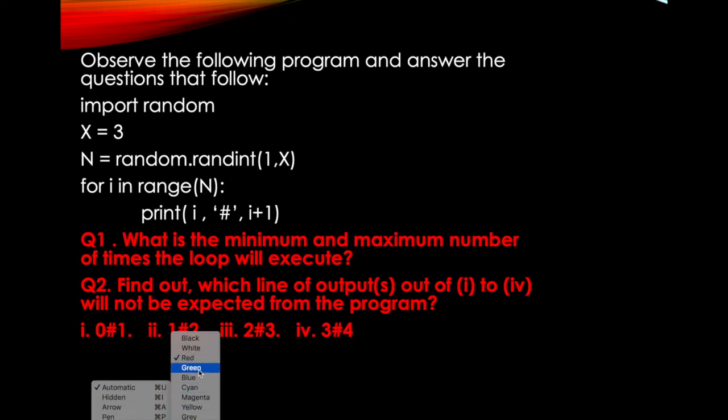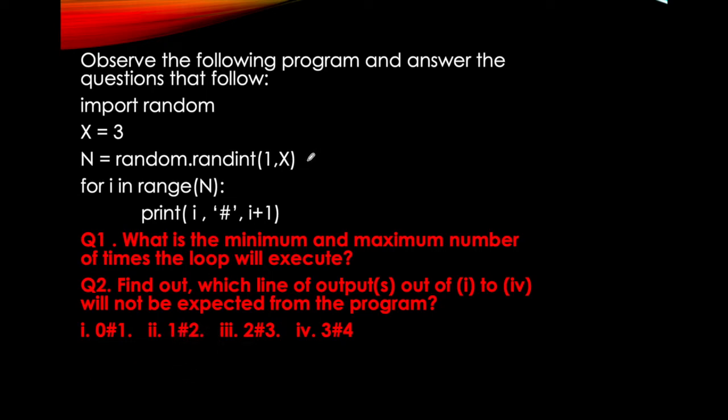And here we go with the type of questions. This question for 2 marks will for sure come in your paper. Now let me tell you how to solve this. I told you last class that in random there is a random function, a randint function, and a randrange function. So which one is being used here? randint. Observe the following program and answer the questions that follow. Import random, X is 3. N gets random.randint(1,X), that means 1,3.